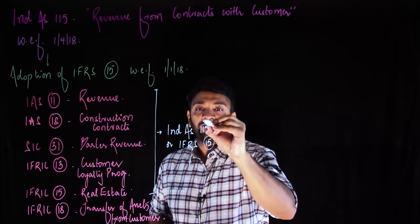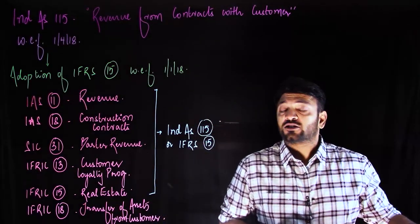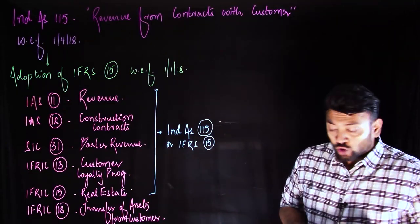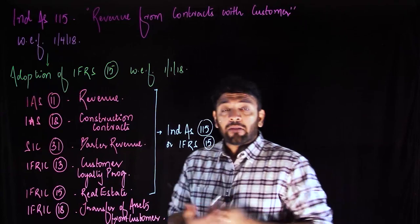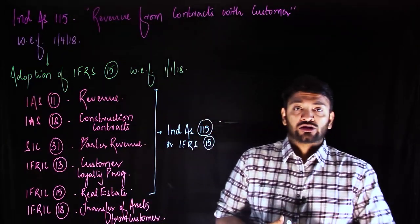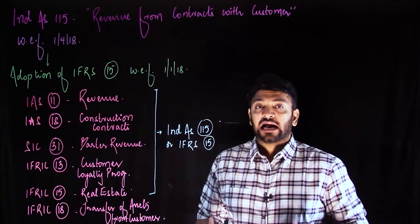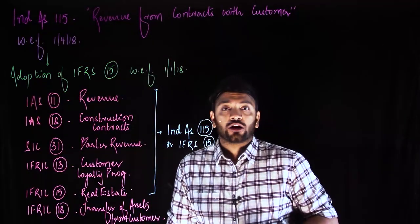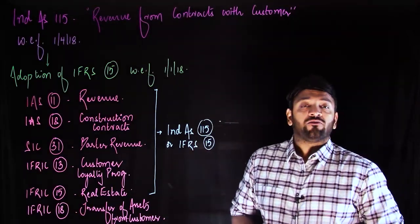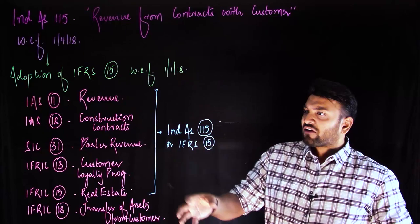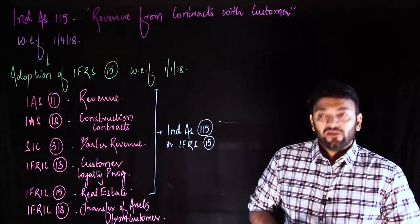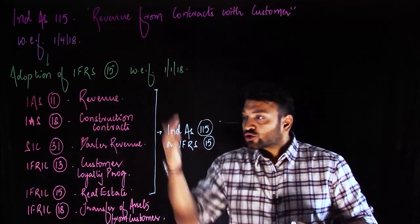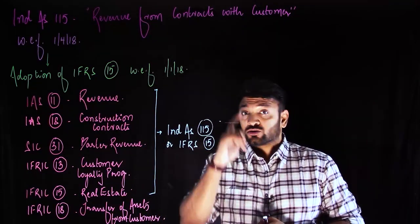Ind AS 115 is a combined effort of two bodies: the International Accounting Standards Board (IASB) and the FASB, which is the US body that gives US GAAP. They pooled their resources to generate one single set of accounting standards dealing only with the revenue recognition process. That is the significance of Ind AS 115 — it is voluminous because so many things are now discussed under one single standard.